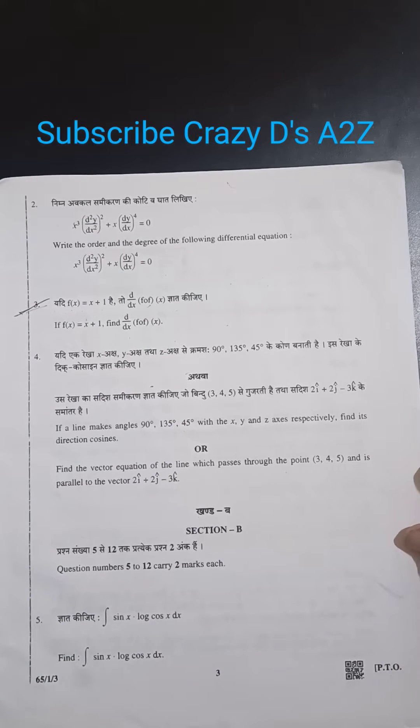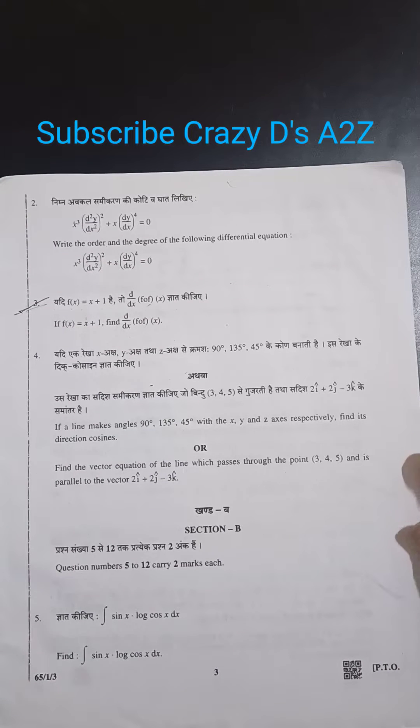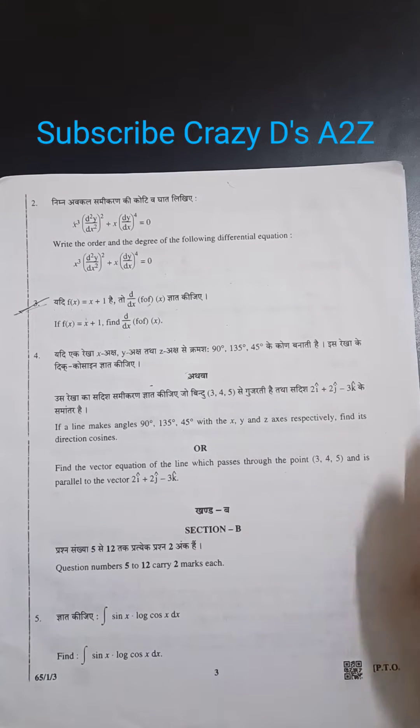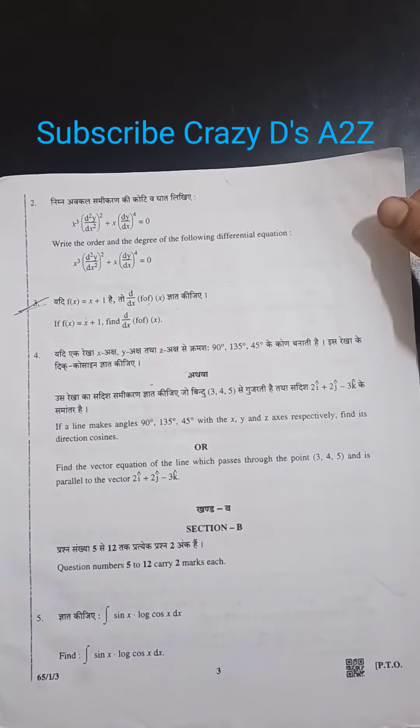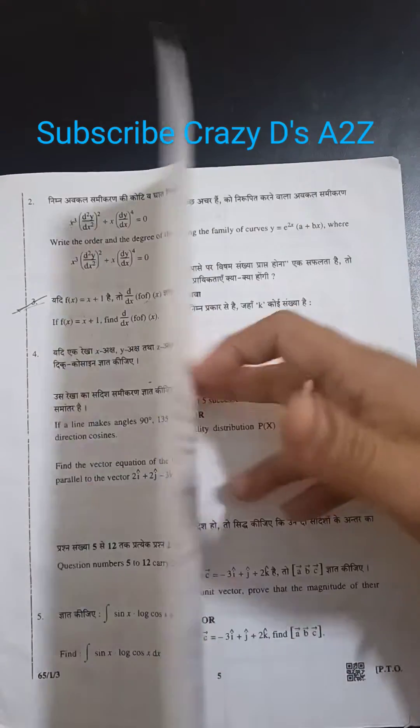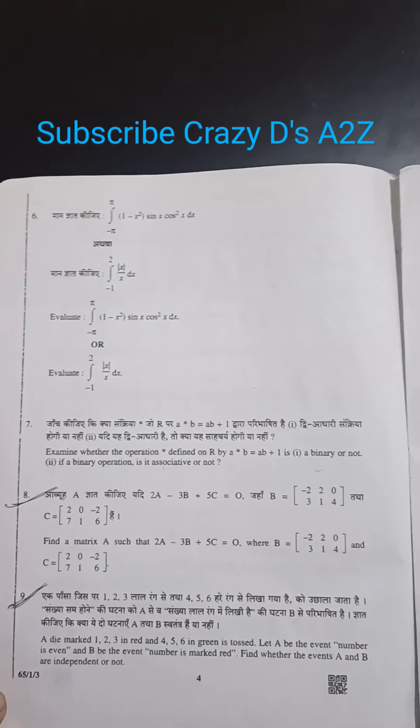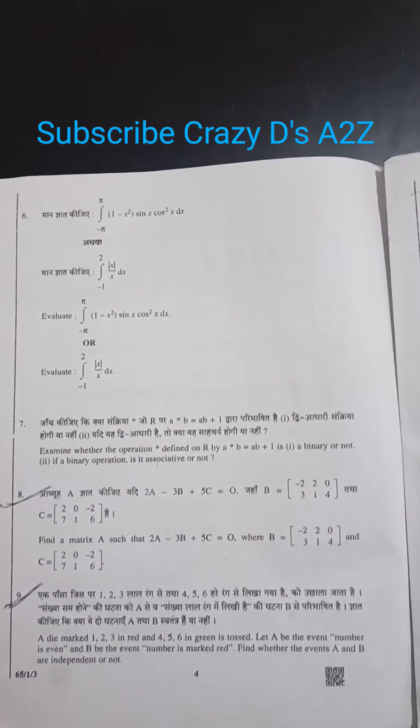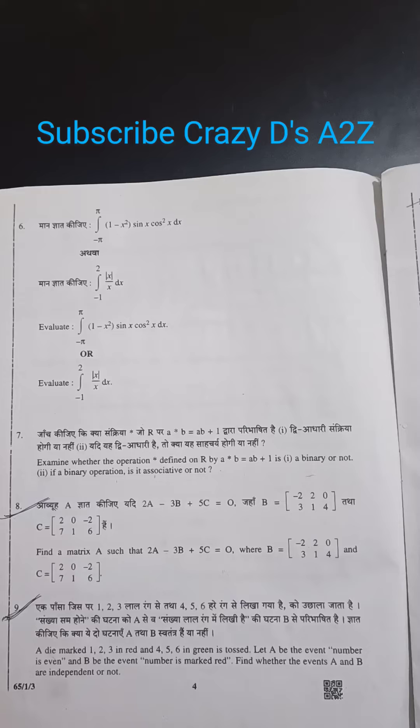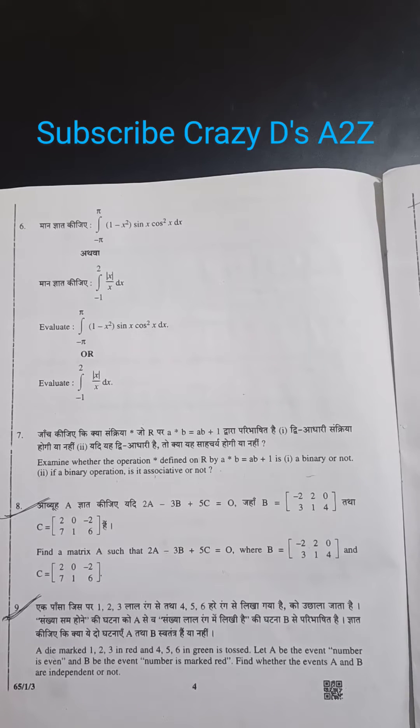This is the paper where questions are present. This paper has question 6 to question 9, that is the fourth page of this question paper.